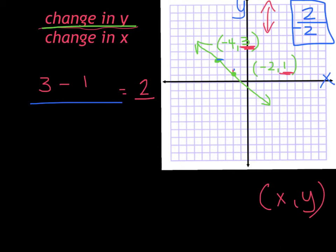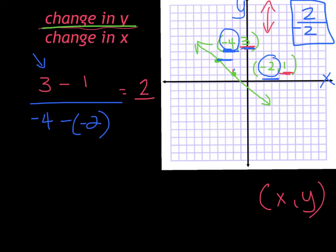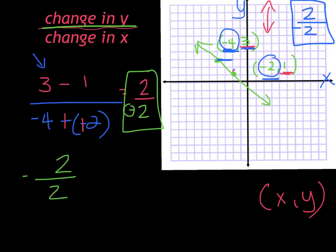Now I want to do the run — the change in the X's, how much I go over. My two X coordinates are negative 4 and negative 2. I need to subtract to find the difference. I'm starting with negative 4 because I started with the 3 up in the Y's — I have to start with the same set of coordinates. So negative 4 minus negative 2. Adding the opposite: negative 4 plus positive 2 is negative 2. So my slope is 2 over negative 2, which matches what I got before. You can put the negative sign out front — 2 over 2 is 1, so the slope is really negative 1.